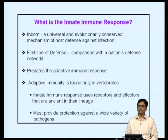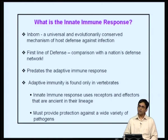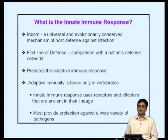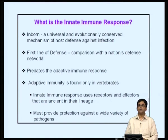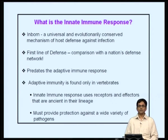The first line of defense is the innate immune response. In a nation's defense network, borders are patrolled by the border security force, which is responsible for security. Subsequently, the army is called in if required. The border security force can be compared to the innate immune response, and the army can be compared to the adaptive immune response.